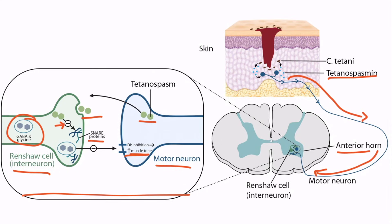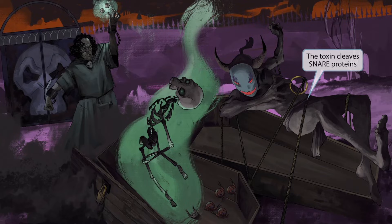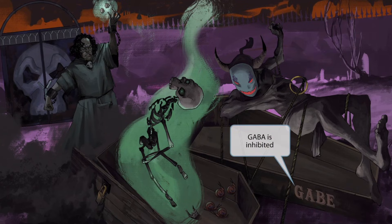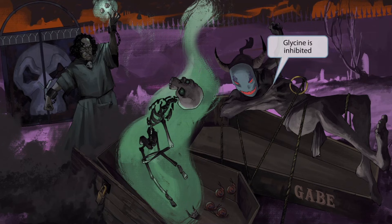Now that you understand the mechanism, let's return to the image and help you memorize these details. Notice that this monster is snared down to the ground with these ropes — the snare here represents the snare proteins. As we just learned, the toxin cleaves snare proteins. In this image, this monster's name is Gabe, and his coffin is appropriately labeled Gabe. This is to help you remember that GABA is one of the affected neurotransmitters. Also notice that Gabe happens to be floating in the air in a gliding upward motion — this gliding upward motion is to help you remember that glycine is the other neurotransmitter that's affected. So, glide for glycine.